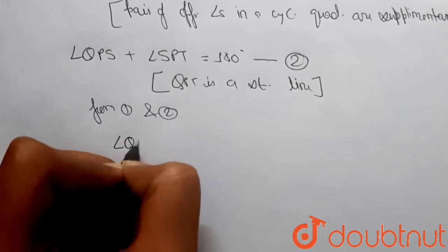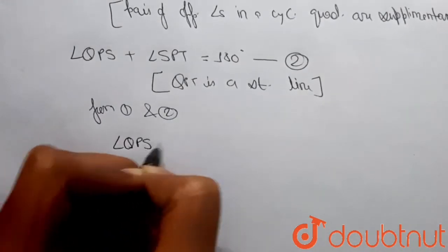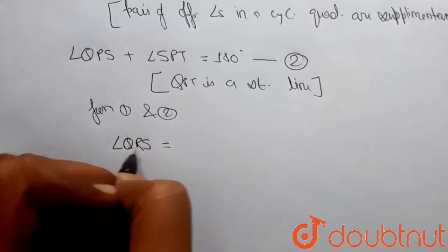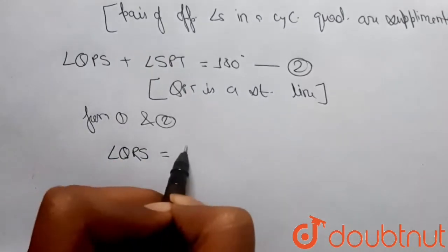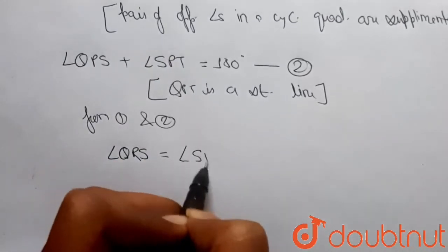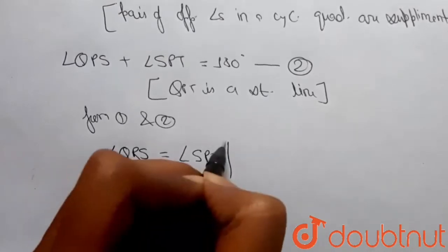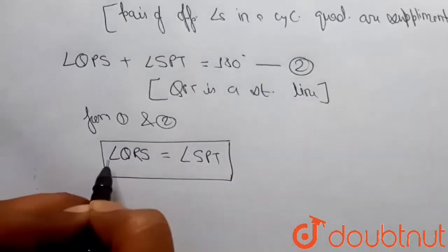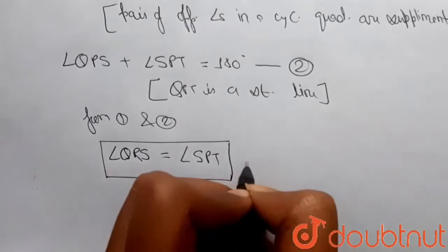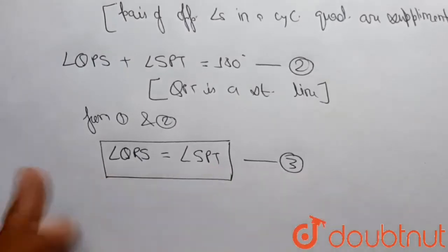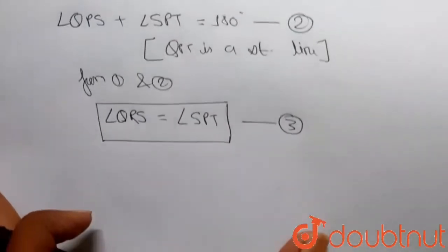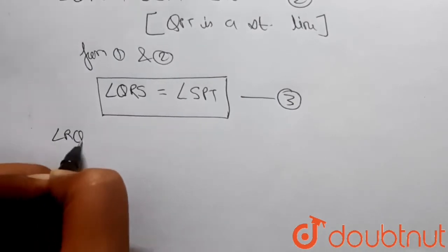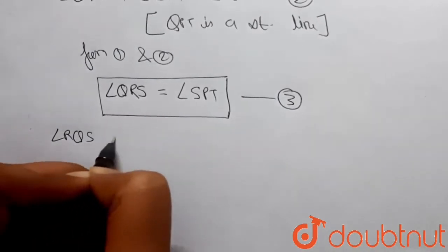From equations one and two, we have angle QRS is equal to angle SPT. Let's call this equation three.